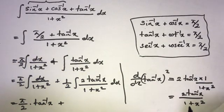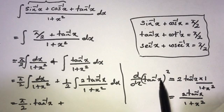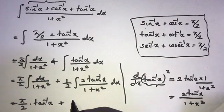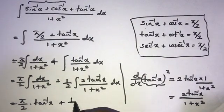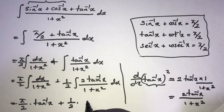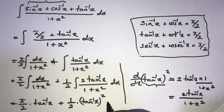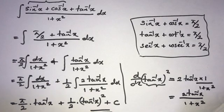Since integration is the inverse process of differentiation, and the derivative of (tan inverse x) squared equals 2 times tan inverse x over 1 plus x squared, the integral of that expression equals (tan inverse x) squared. So we can write the final answer as 1 over 2 times (tan inverse x) squared plus C, where C is the constant. If you like this video, please subscribe. Thank you for watching.